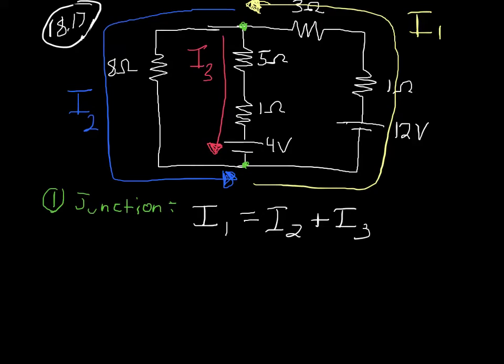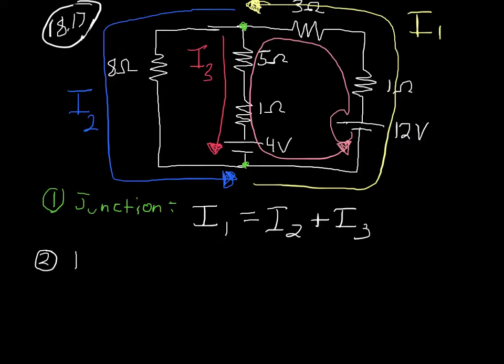Now, for the second aspect of a Kirchhoff's Law problem, I want to do the loop rules — I want to draw loops around my circuits. I'm going to choose my first loop to be this internal loop. I'm going to go from the negative side of the 12-volt battery to the positive side, and then loop all the way around the right side of my circuit. To write the loop rule for this situation, I start at 12 volts — jumping from the negative to the positive — so here I have a positive 12 volts.